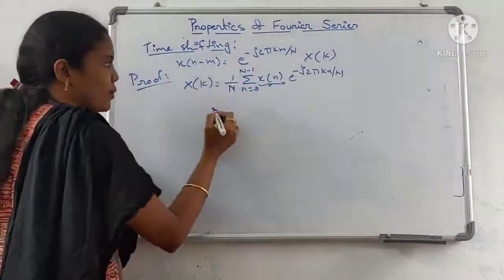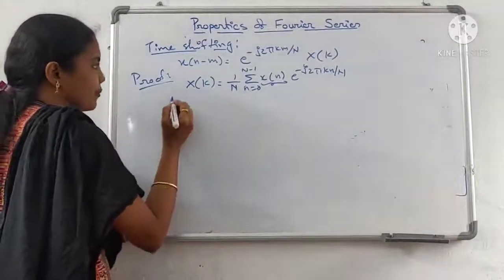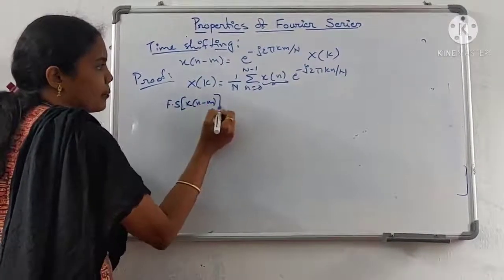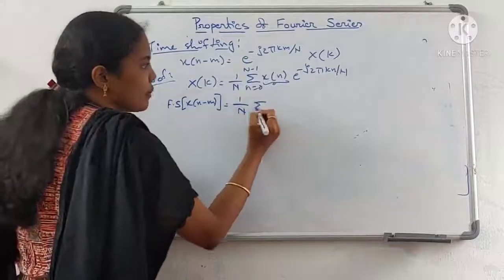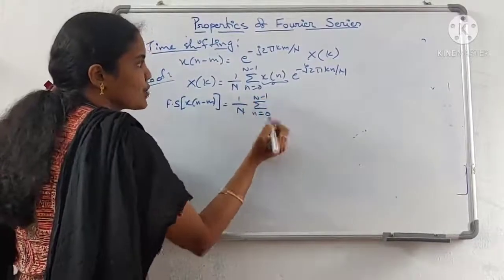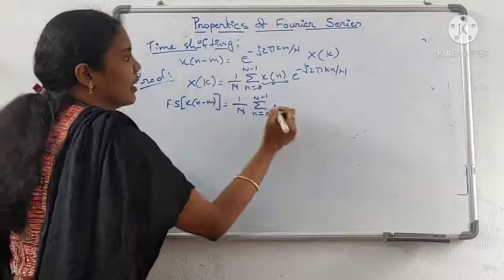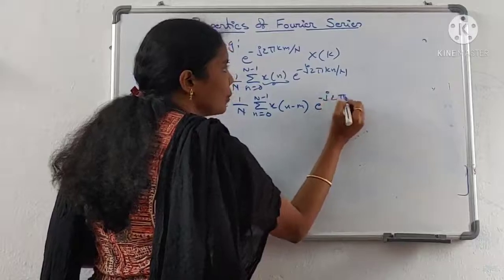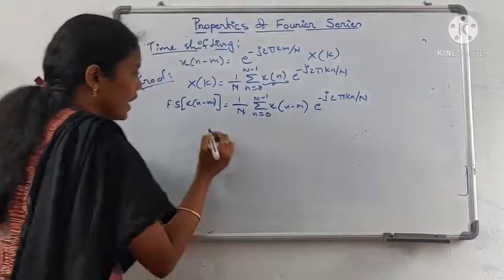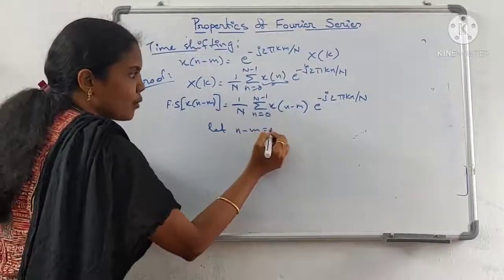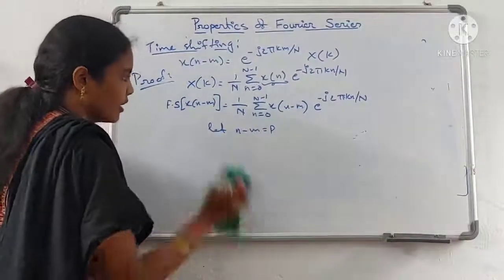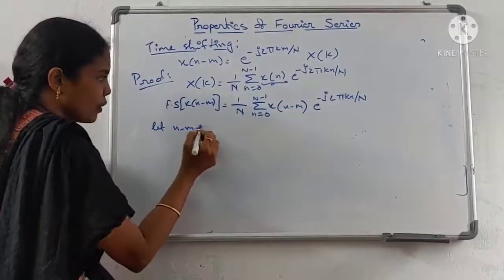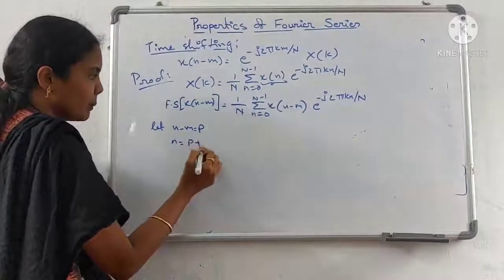Now, x(n) is replaced by x(n minus m). So X(k) is the Fourier series of x(n minus m), which equals 1/N summation from n=0 to N-1 of x(n minus m) e^(minus j 2 pi k n / N). Let n minus m equal p, then n equals p plus m.